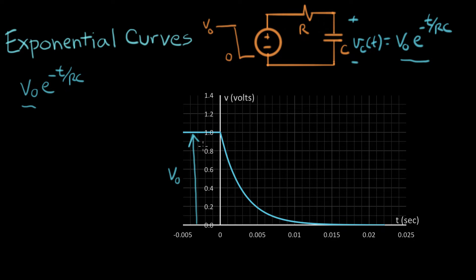That's what it originally charged up to. And now we want to look at this point right here, right when it goes through time equals zero and the curve starts to drop. We know how high it is — it's V-naught volts high. What I want to look at now is what's the slope right at this point?